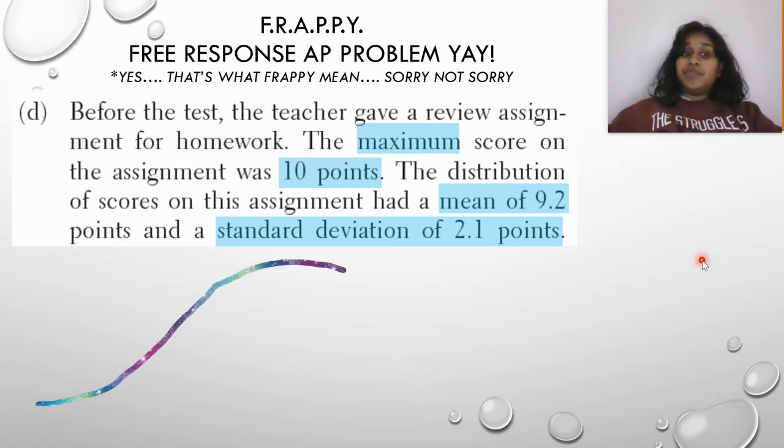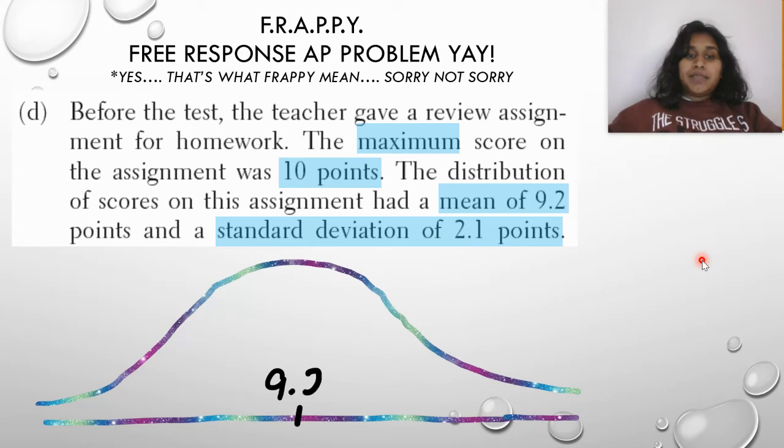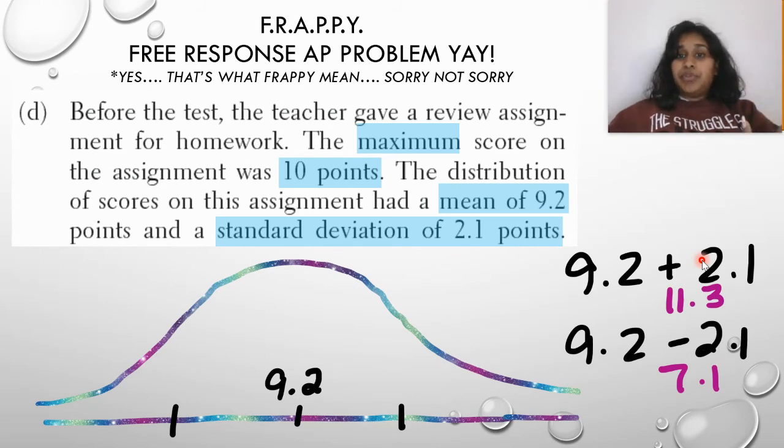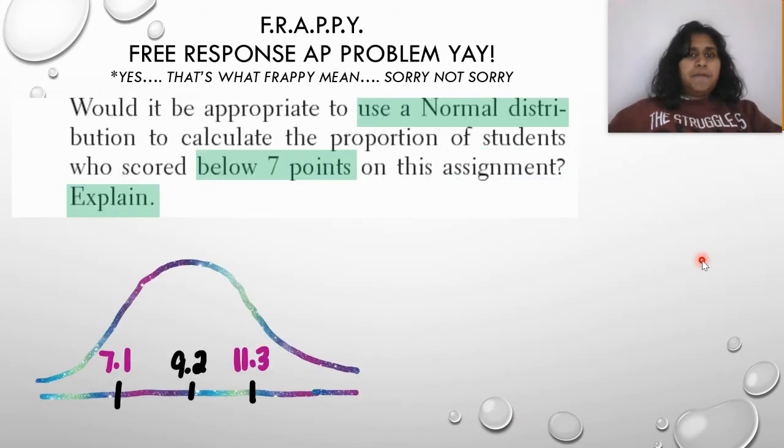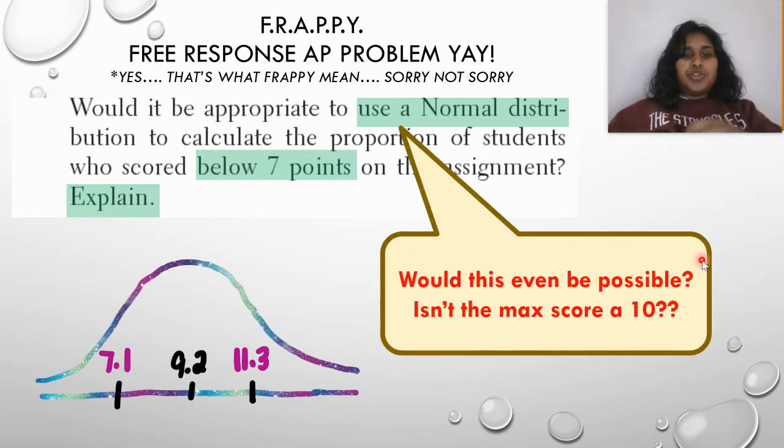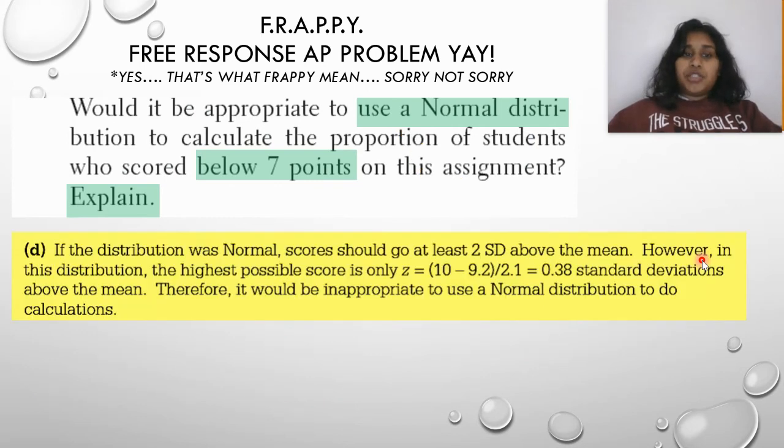So here's my normal curve. Pretty colors. I label my mean, and now I'm going to label a Z of positive one and a Z of negative one. So I add 2.1, my standard error to both my means, add and subtract, and I get my Z positive one, Z negative one. Well, hold the phone. If they want to know that this is a normal distribution, can this be possible? Can I have a Z of positive one of 11.3 when the max score on this assignment was 10? This doesn't make sense for a normal distribution. So if the distribution was normal, scores should go to at least two standard deviations above and below the mean. However, in this distribution, the highest possible is only a Z of 0.38. So they calculated out what would happen if we dealt with the max score you could get. Therefore, it would be inappropriate to use normal distributions to do these calculations.